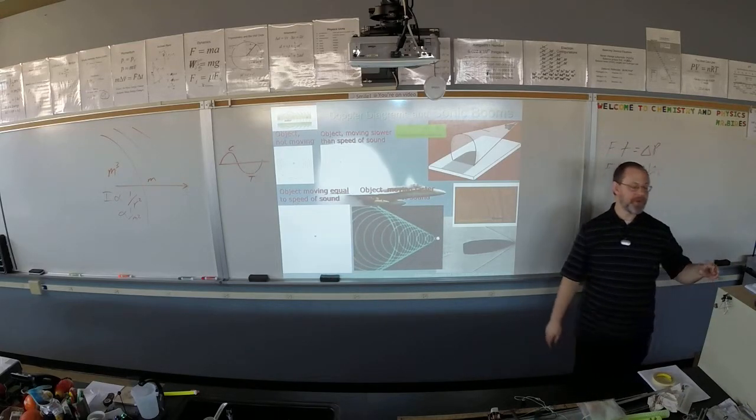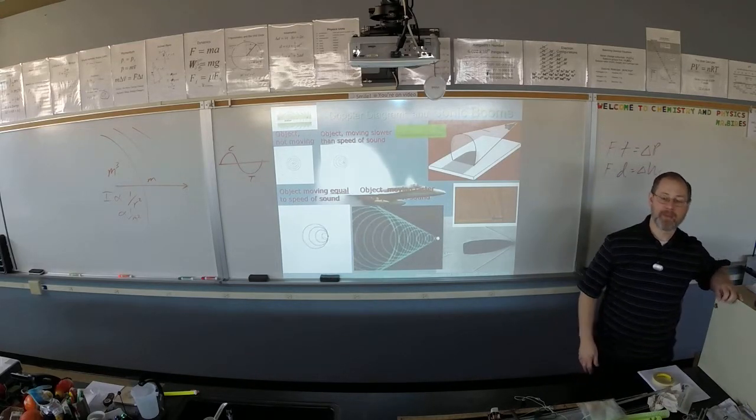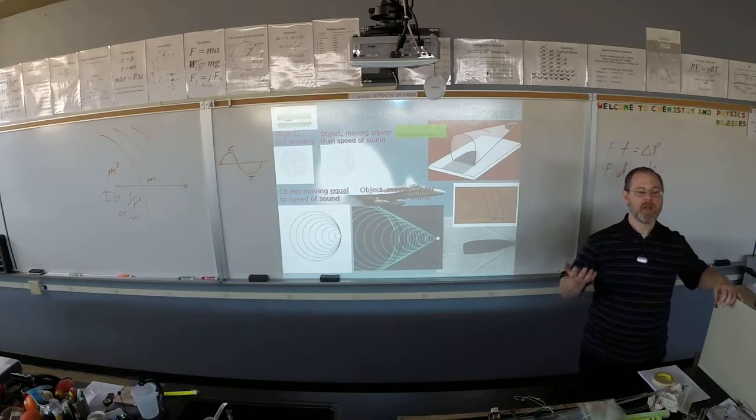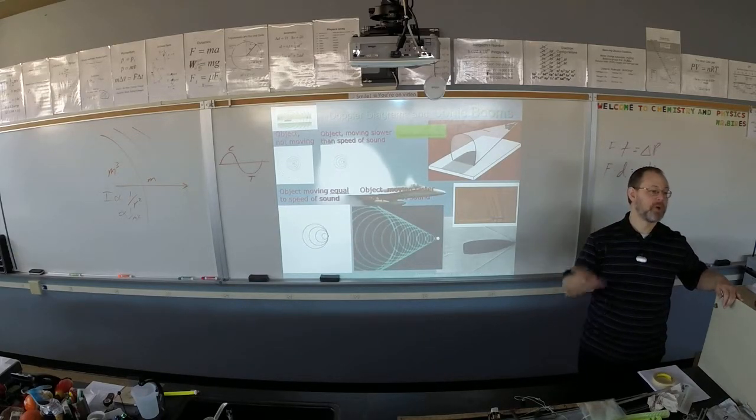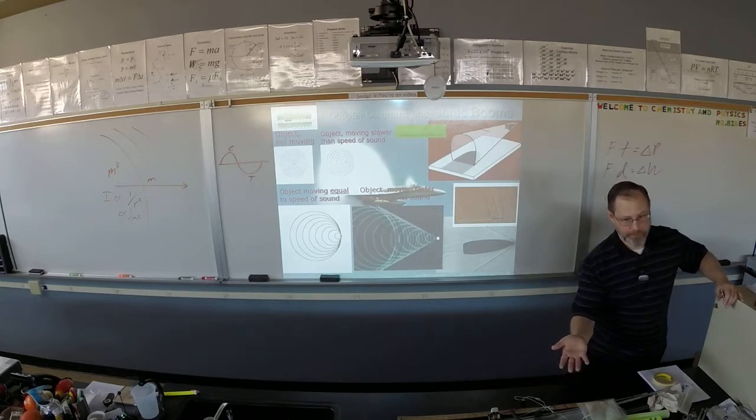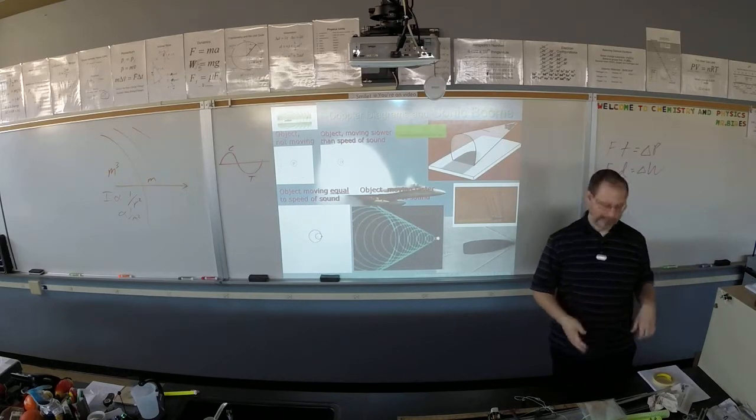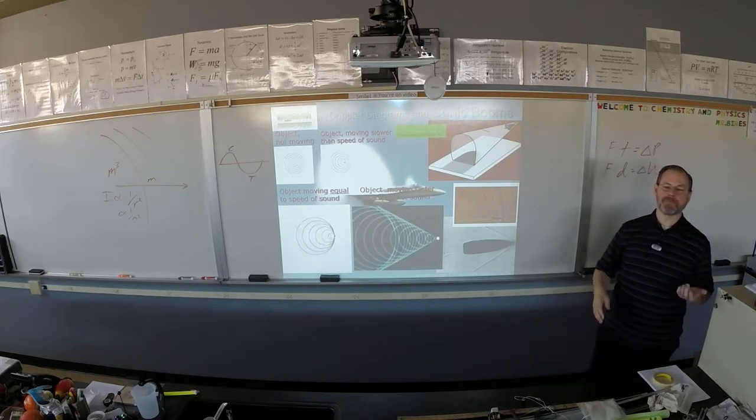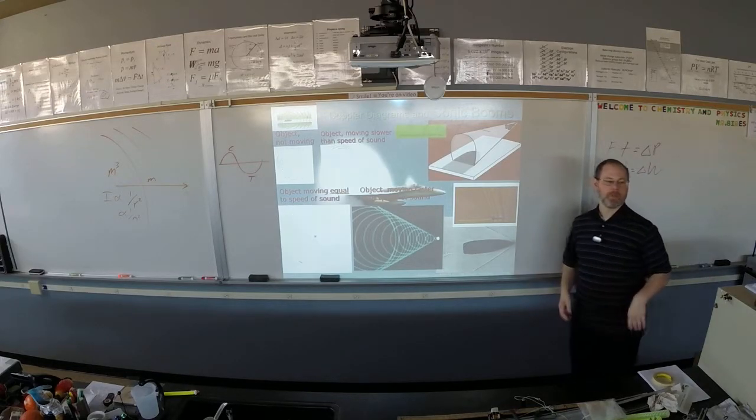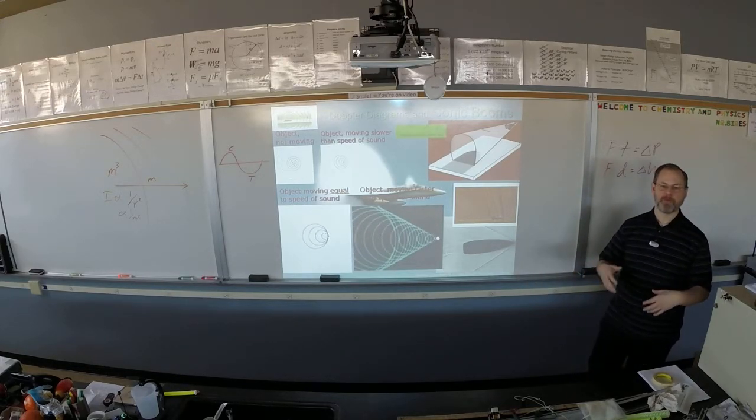It's named after a guy named Ernest Mach. The Mach number is basically a multiple of the speed of sound wherever you are. Mach two is double the sound. Exactly, Mach two is twice the speed of sound wherever you are. Mach three is three times the speed of sound wherever you are.